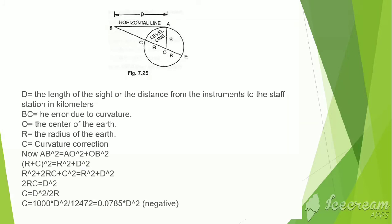D is the length of sight or distance from the instrument to the staff station in kilometers. BC is the error due to curvature. O is the center of earth. R is the radius of earth. C is the curvature correction. Now, if we apply Pythagoras theorem in triangle ABO: AB^2 = OA^2 + OB^2. AB = R + C. Now, R^2 + 2RC + C^2 = R^2 + D^2. R square gets cancelled.